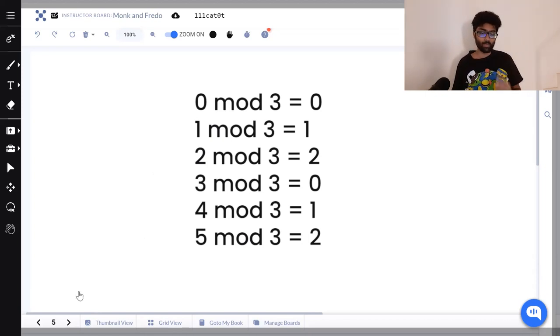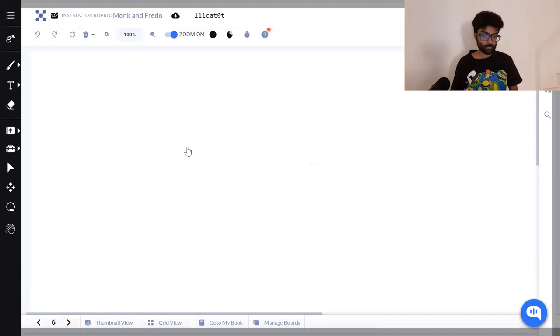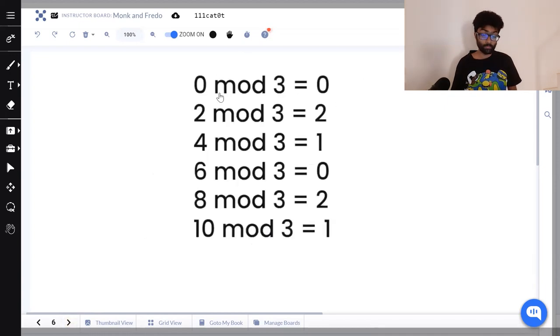And it doesn't just work if I add one. Let's say add two. Zero mod three gives us zero, two mod three gives us two, four mod three gives us one, and then we get zero, two, one again. Here the pattern is zero, two, one, which keeps repeating after a cycle of three.